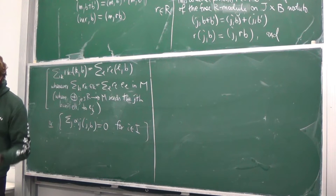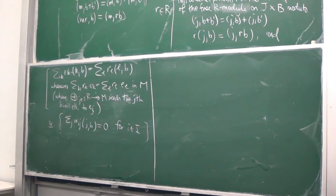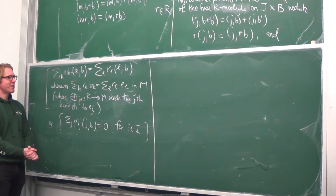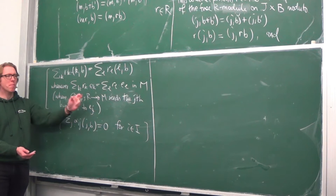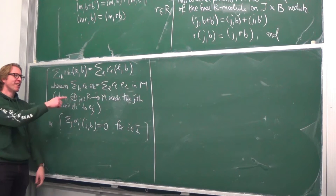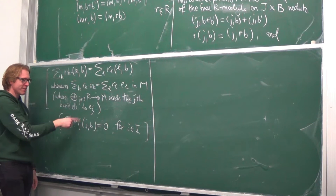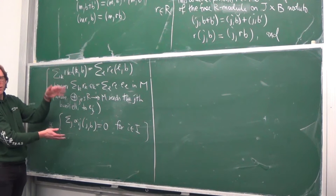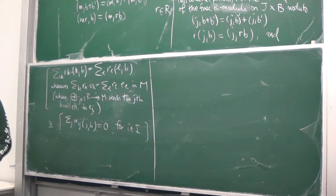One question: why does Ker(α) not appear in the first presentation? That's because what we're doing is describing the kernel instead of describing M directly. If a relation between generators is true in M, make it true on these symbols — and any relation between elements in M is generated by these canonical relations. So this is just the special case where the right-hand side is zero. Any such equation can be generated by these ones, so really they're saying the same thing.